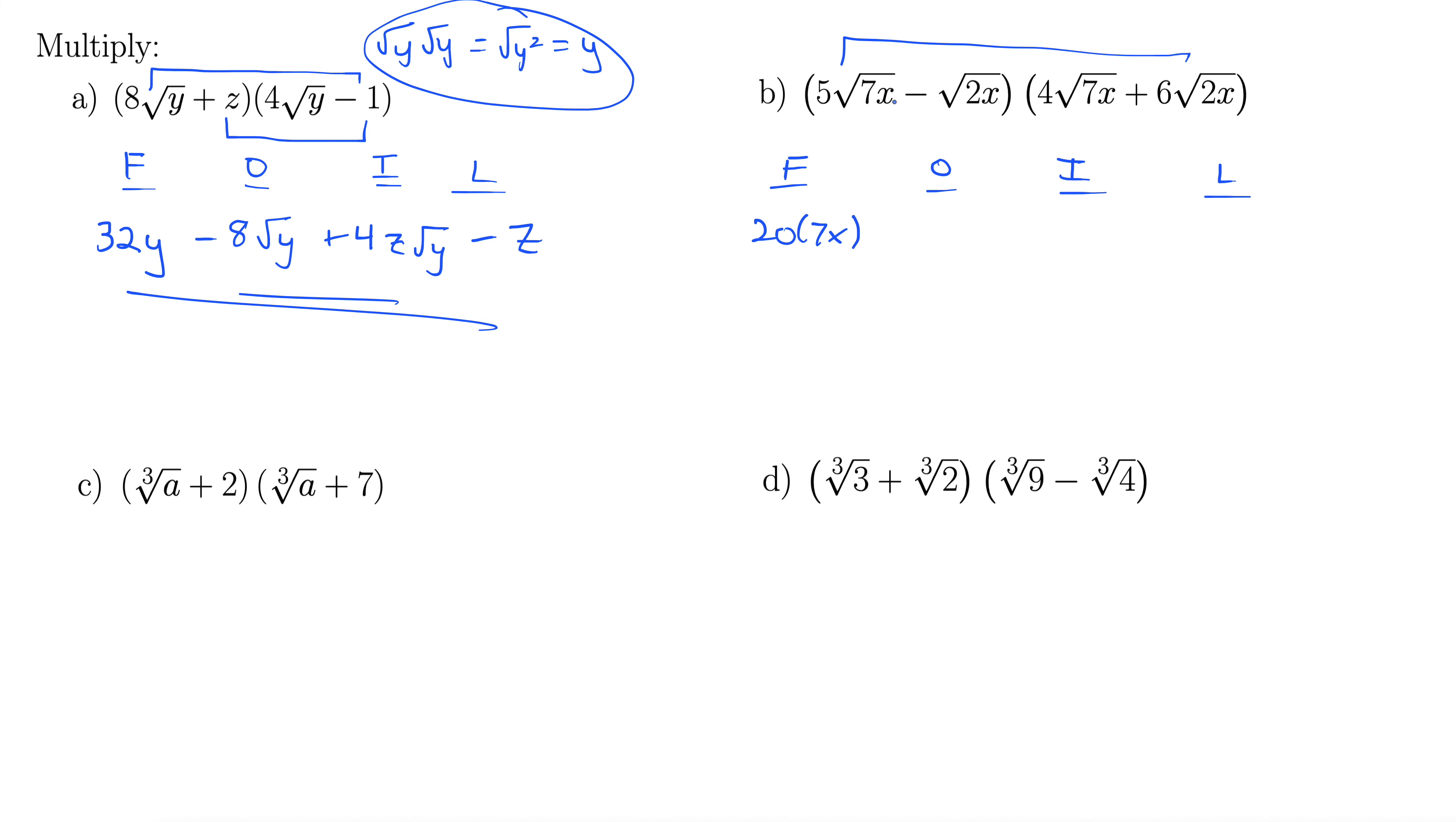Outside, so 5 times 6 is 30, so plus 30. And then what's going on on the inside? Let's just put those together inside the radical. We have 7x times 2x, so that's 14x squared. So that's outside, inside, so minus 4 times radical 2x times 7x, again, is 14x squared.